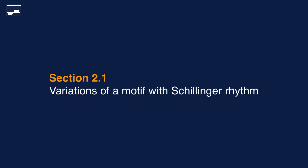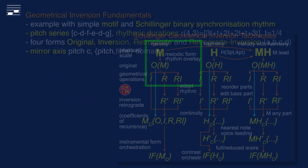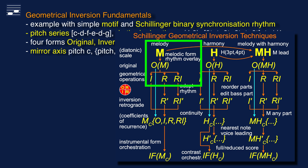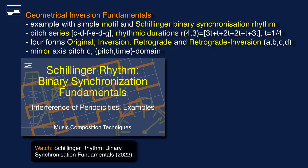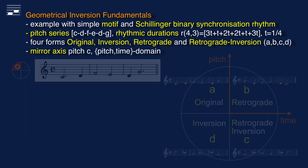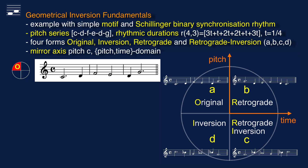The four variation forms will be introduced with a simple example. It is a six-note motif with a binary synchronization rhythm. Watch this video tutorial, which is an introduction to this category of Schillinger rhythms. Listen to the original form of the motif and notice the symmetry in the note attack duration pattern.